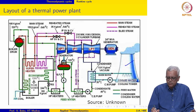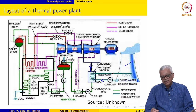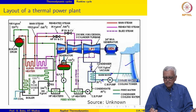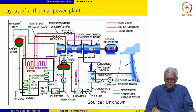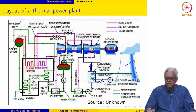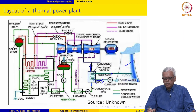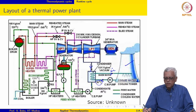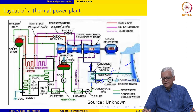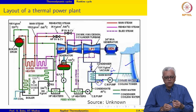The cooled water from the cooling tower enters the condenser, picks up heat from the saturated mixture coming from the low-pressure turbine, and leaves at a higher temperature. This water circuit is separate from the turbine circuit, which operates at sub-atmospheric pressure. Basically, water from the cooling tower enters the condenser at around ambient temperature and leaves at temperatures around 50 or 60 degrees Celsius.